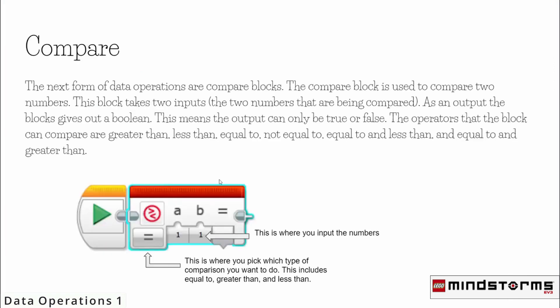The next form of data operations are compare blocks. The compare block is used to compare two numbers. This block takes two inputs — the two numbers being compared — and as an output, the block gives out a boolean, meaning the output can only be true or false. The operators that the block can compare are greater than, less than, equal to, not equal to, equal to and less than, and equal to and greater than.